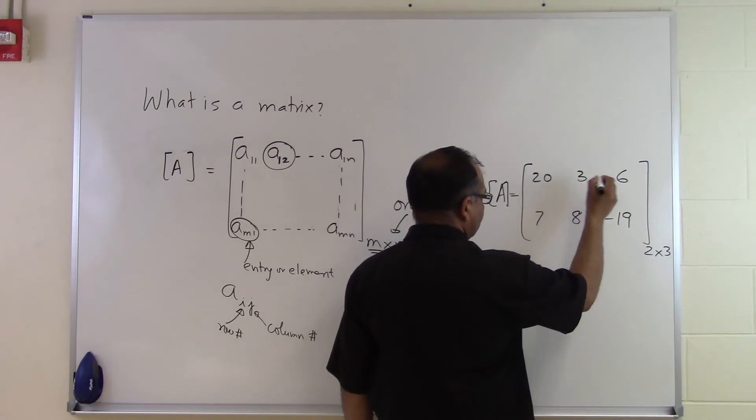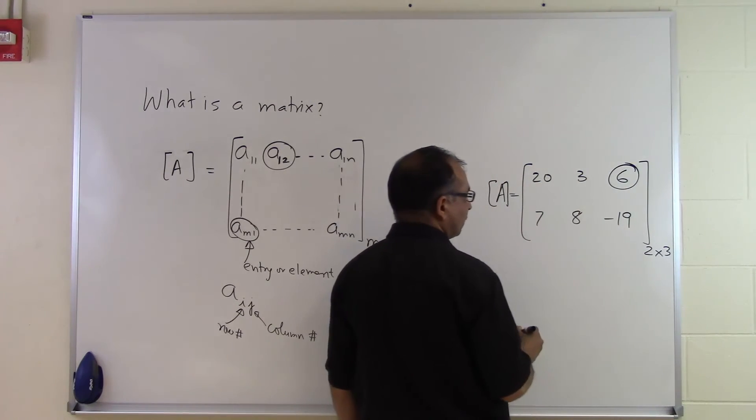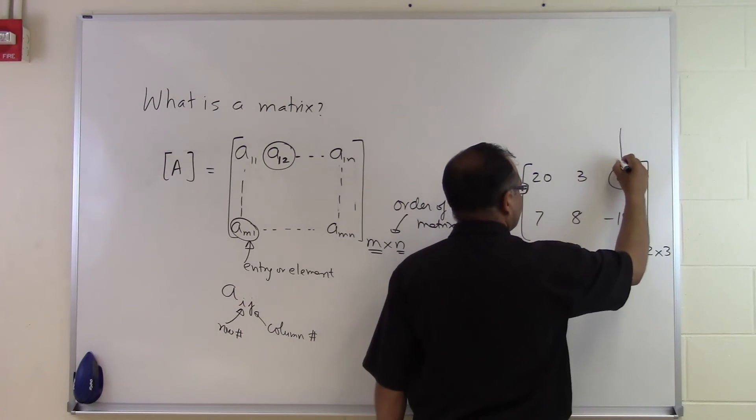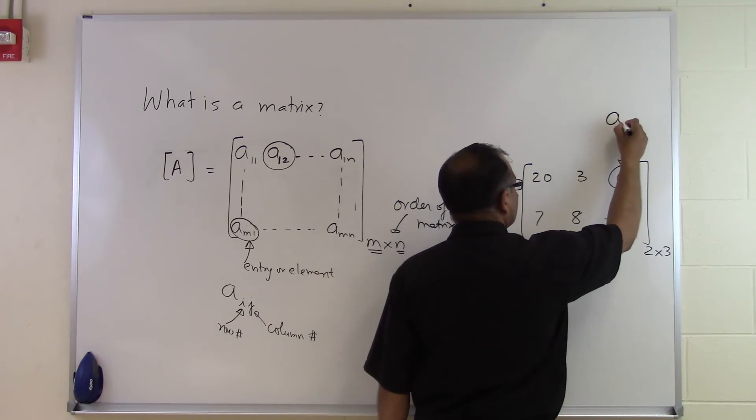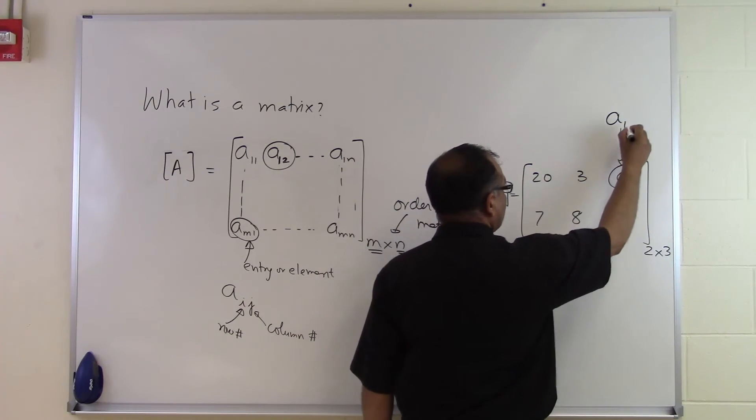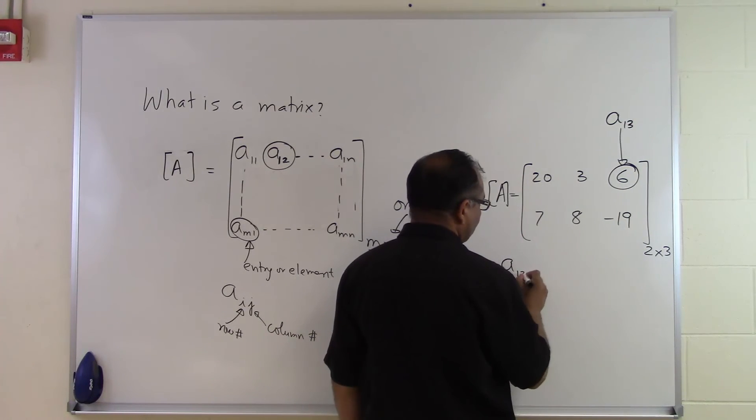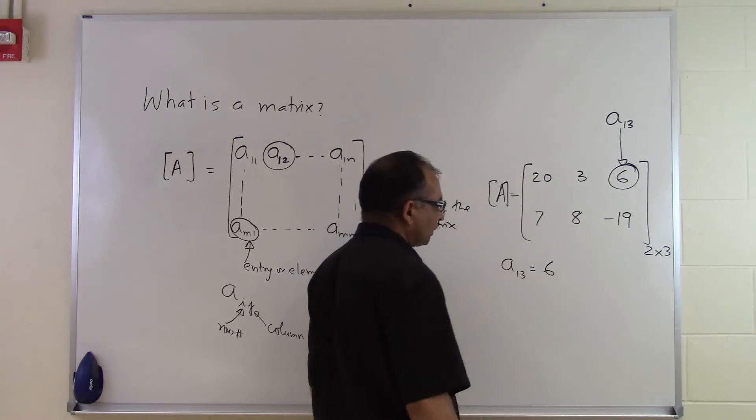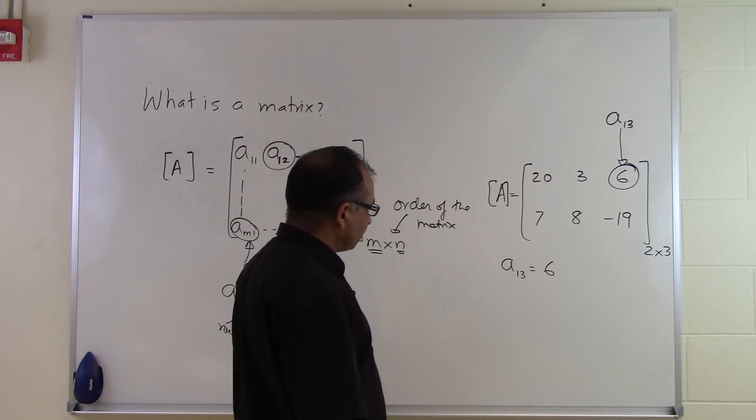Each of these is called an entry. Let's suppose I look at this particular entry or element here. This one is in the first row and the third column. So it's A13. I can say A13 is equal to 6, for example.